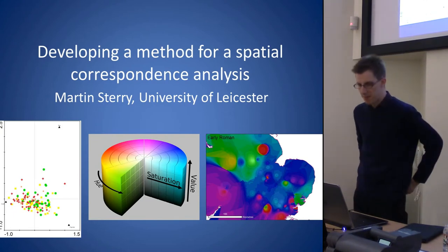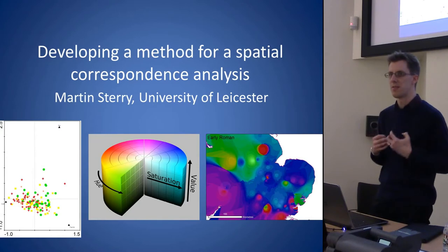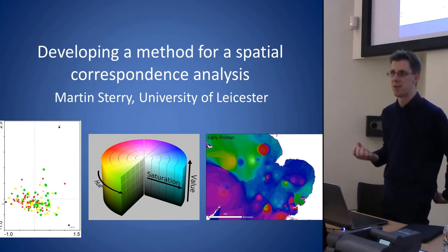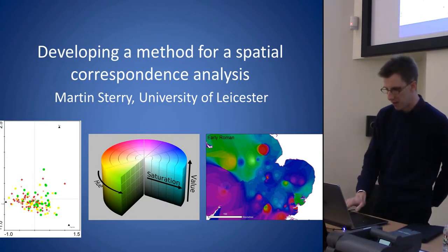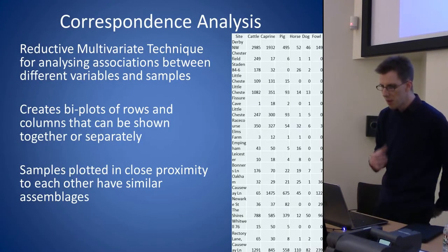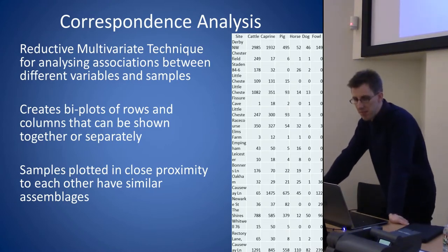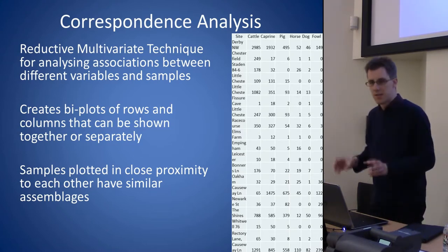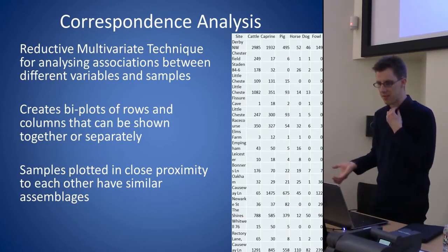This paper comes about from wanting to try and take a lot of the rich data that we have in archaeological assemblages and to be able to analyze that spatially in new ways. In the example on the right, we've got a series of different sites and for each site, the number of bones of different species catalogued.